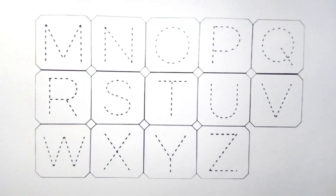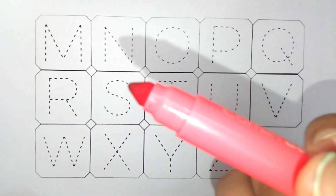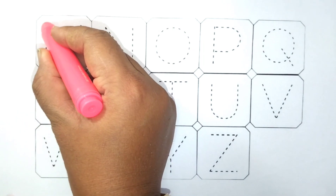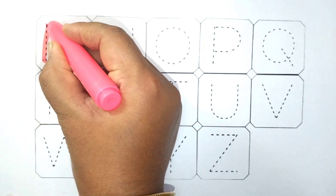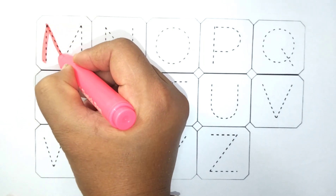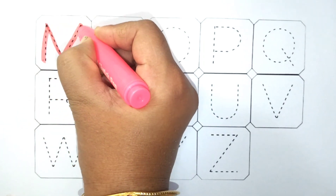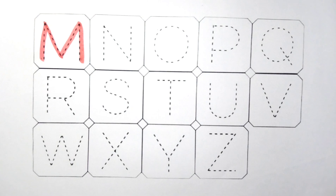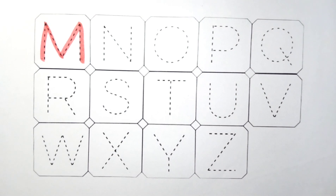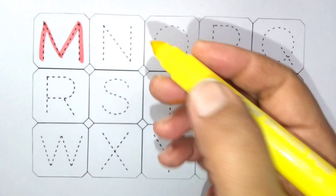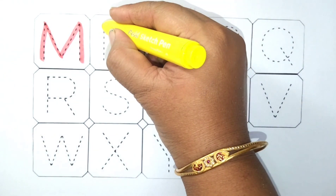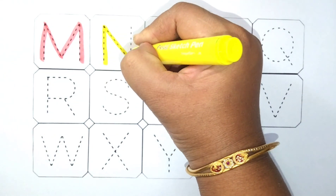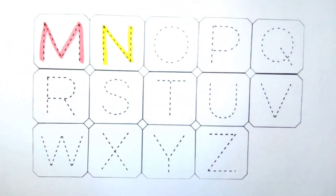Pink color. M — M4 — monkey. Yellow color. N — N4 — nest.